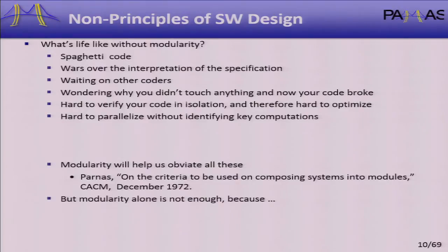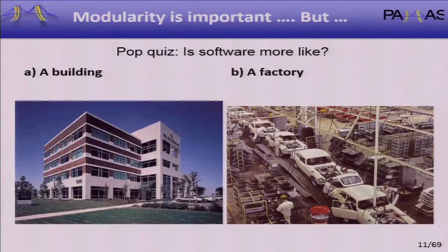Modularity is what we need, and this is not a new idea — it's over 40 years old. This is the pivotal paper in the history of software engineering. Modularity is important, but for parallel programming, it's not quite enough.